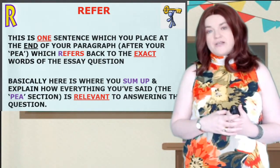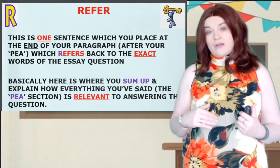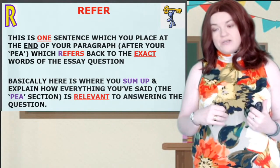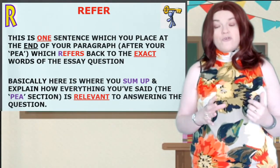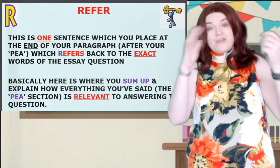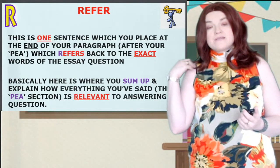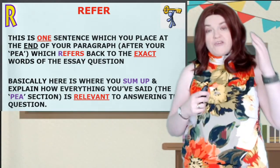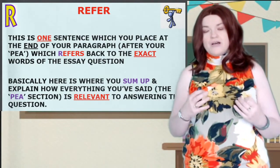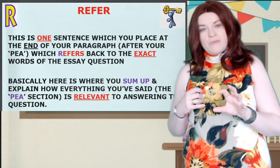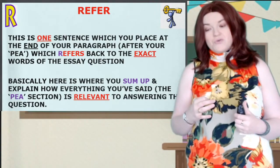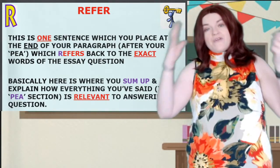The last section is R, which stands for Refer. This is a crucial point in the paragraph structure — basically one sentence that goes back to the essay question. You use the exact words or similar words to the essay question. What that does is show the marker that you're honing in on the question and that everything you've said in the PEA is relevant. Most people fail the critical essay because they've memorised an essay in advance, walk in, write it down, and it's nothing to do with the questions in front of them. You have to marry together your knowledge of the text, the quotes you've memorised, the analysis, and the question on the day.